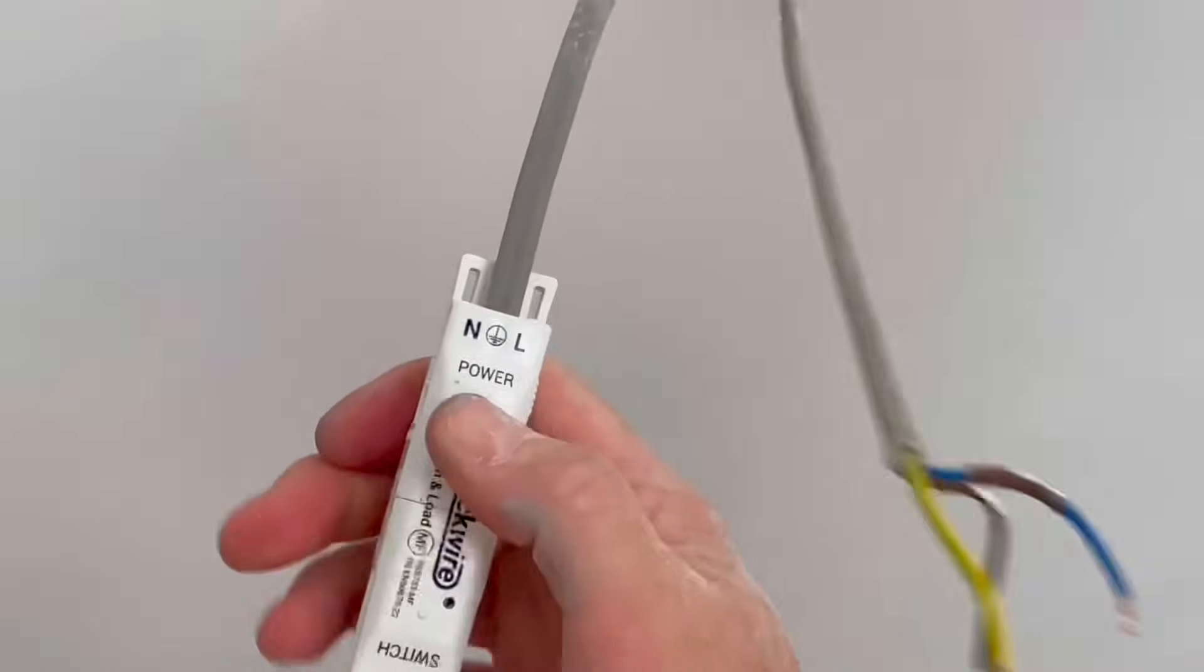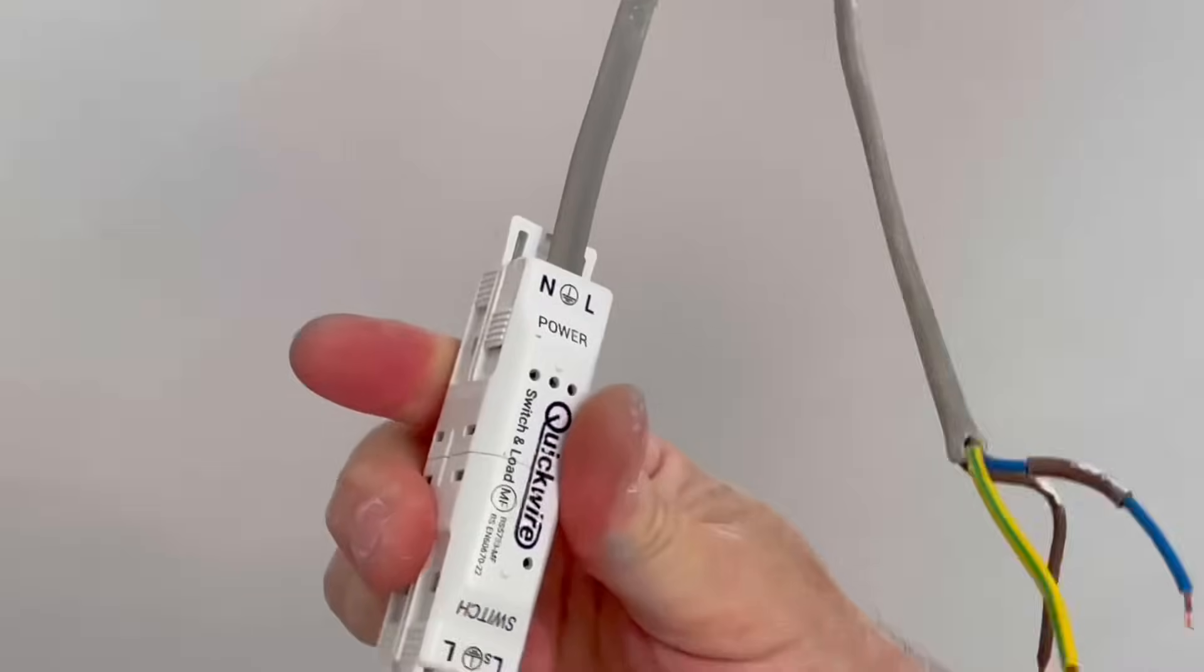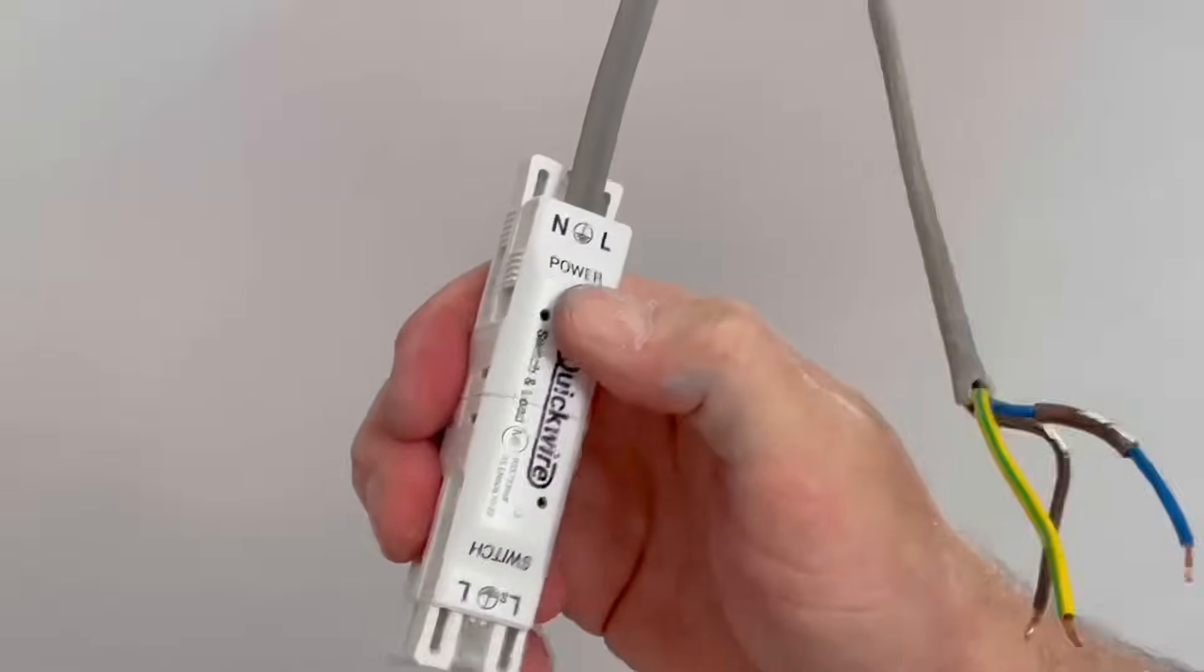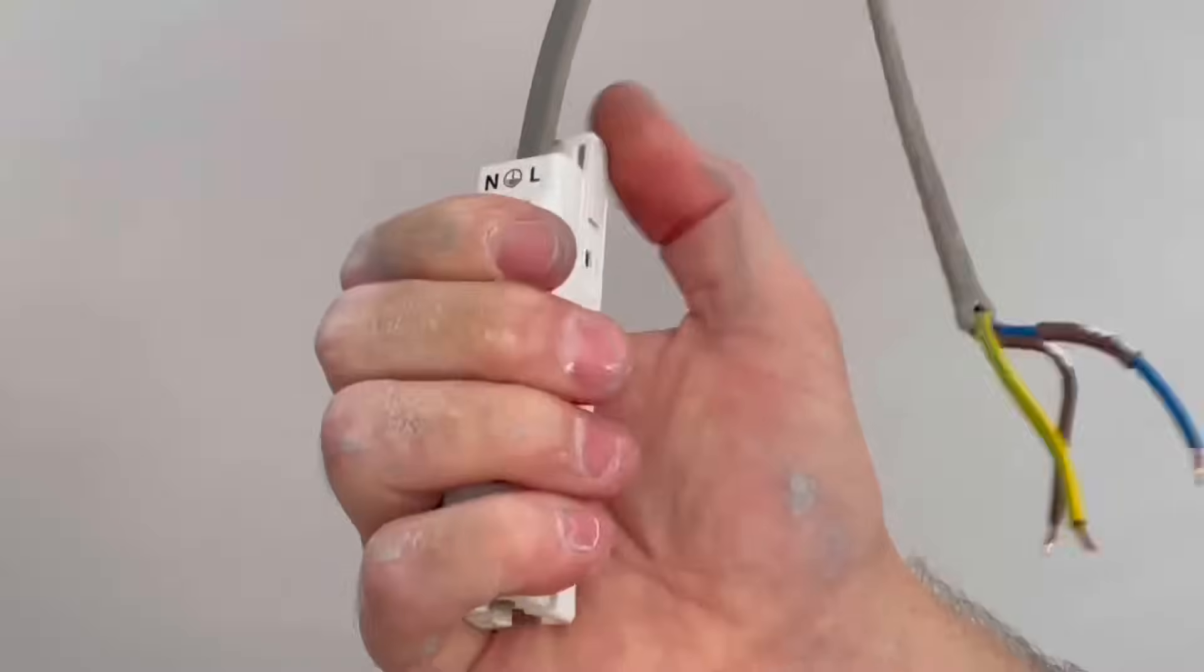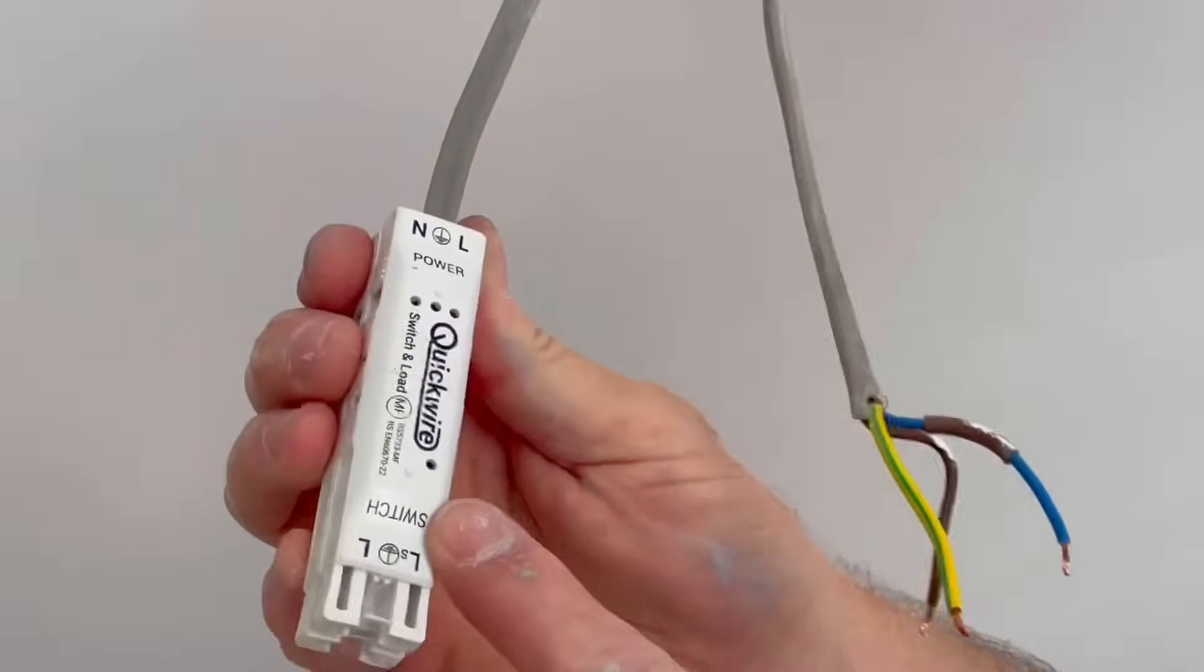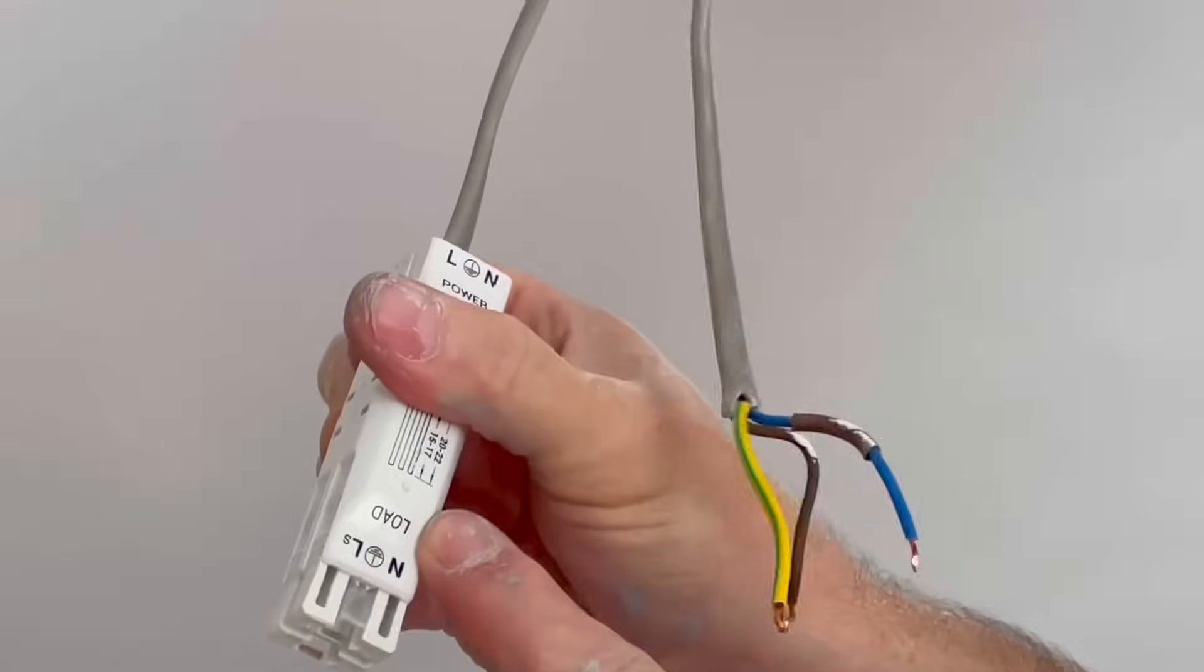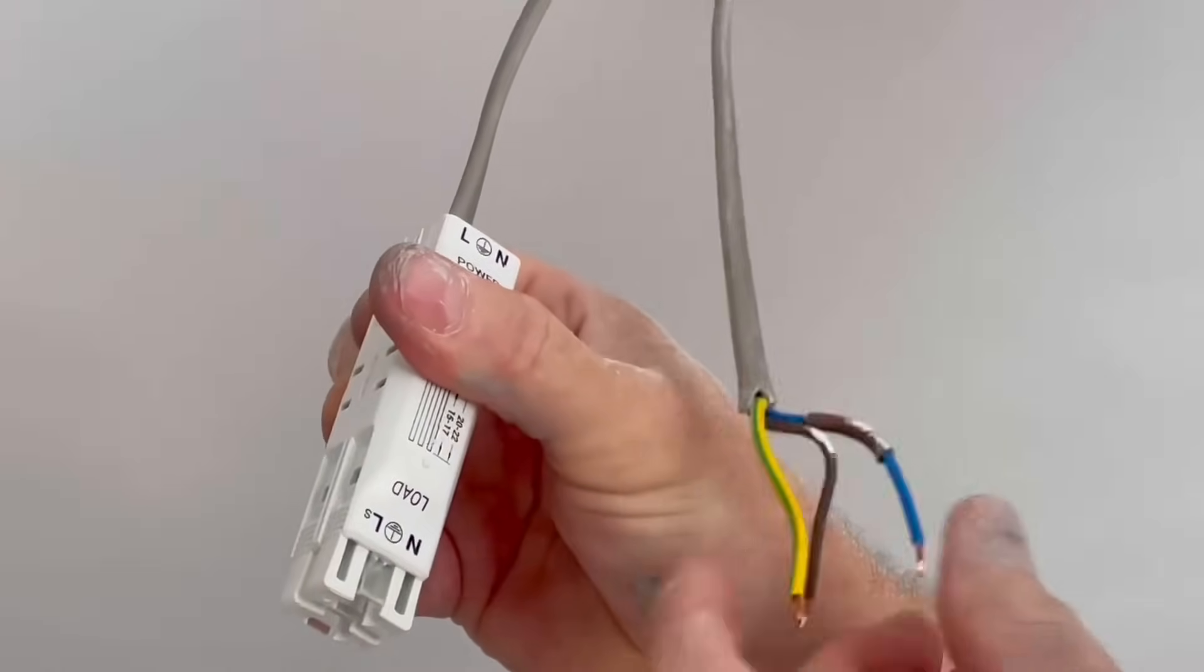There you go, the power is connected now into this QuickWire switch and load connector, that's the supply coming in. We haven't got a supply going out so we don't need that section there, we can just click that into place. All we've got to do now is put the switch and load in so I've got the switch here, we'll do that one next.